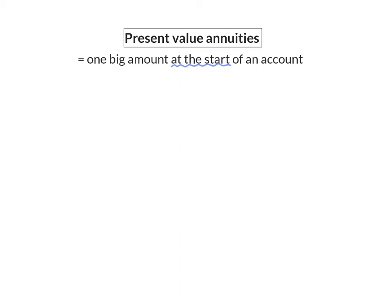Today, we're going to have a look at the present value formula. This formula determines one big value at the start of an account that is then broken up into equal regular payments. This formula then takes each of those payments and removes the interest that it will still receive to determine the value of the account at the beginning.